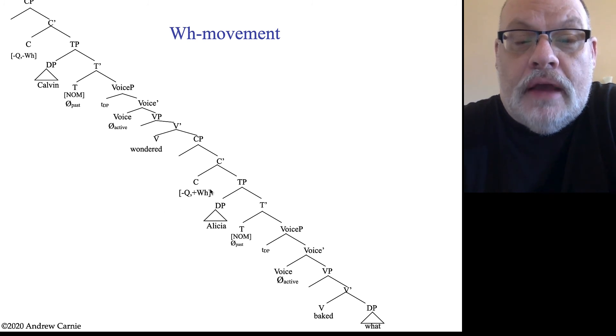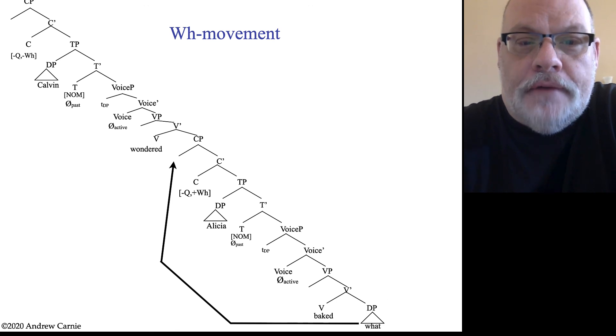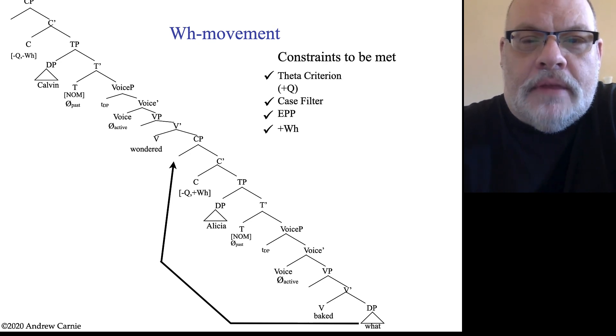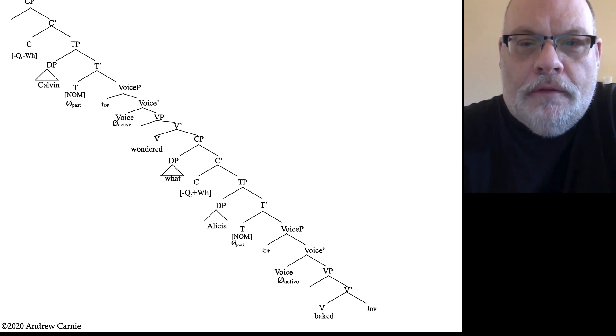The last feature we have to deal with has to deal with this plus WH. Now, up here, critically, this one is minus WH. So nothing is going to move into this position in this particular sentence. Now, in other sentences later that we're going to look at, this will be plus WH too. And the element will move into this position. But here, we're just looking at a sentence where the WH movement is embedded and embedded only. So we're concerned with this WH element. Now, we have a number of things that could potentially move into this position, but critically, this what is the only one that meets the conditions of the plus WH. It's a WH element, and it moves into that position to check off that WH feature and meets all the right conditions. This gives us a well-formed surface structure. Calvin wondered what Alicia baked.